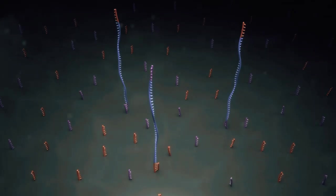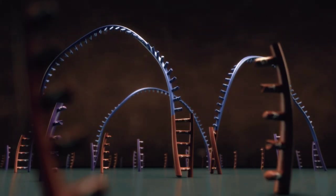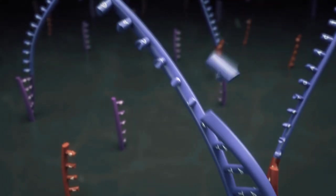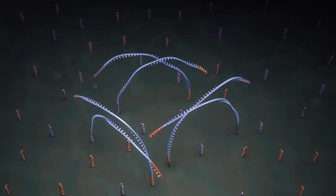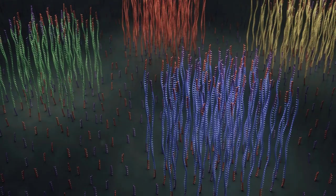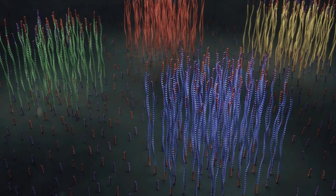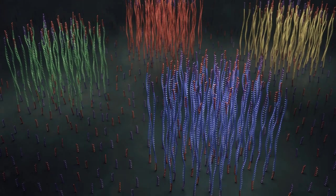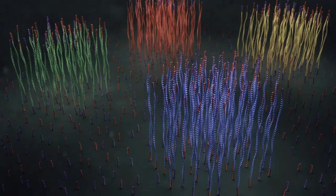The adapters bind to matching DNA primers on a surface, and the amplicons get extended. This process is repeated in cycles, which generates a small cluster with identical sequences on the surface. Each cluster represents one specific protein from one specific blood sample.